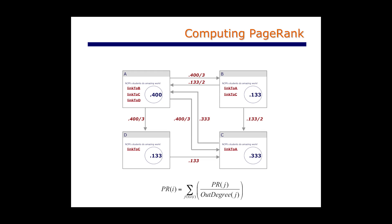But a question that might be on your mind is: where does this process end? For networks that have certain properties — which I'll discuss in greater detail in class — you know that you're going to arrive at a set of final values that are final in the following sense: you take the page rank value of each page, divide it up among the pages that it points to, and sum up the value flowing into each page. What you end up with is the same set of values that you started with.